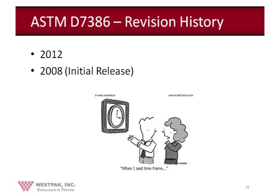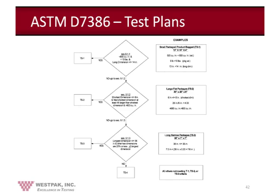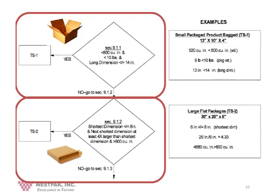ASTM D7386 has only two revisions and has been around since 2008. Within it, there are only four test plans, determined based on the geometry of the package — you cannot select a test plan. For Test Plan TS1, the package needs to be less than 600 cubic inches, less than 10 pounds, and the longest dimension less than or equal to 14 inches — this is a small package. If one of those criteria is false, you go to Test Plan TS2, which requires the shortest dimension to be less than or equal to 8 inches, the longest dimension at least four times larger than the shortest, and greater than 800 cubic inches — this is a large, flat package.